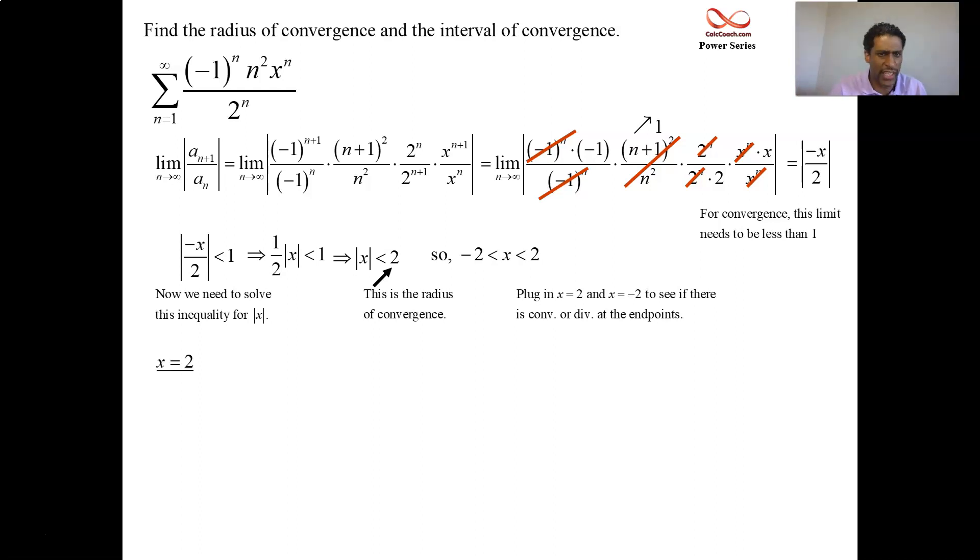So we put in x equals 2 to check that endpoint. Replace the x with the 2. What happens is those 2 to the ns will end up canceling out on you, and you're talking about an alternating n squared. When n is 1, it's a negative 1. When n is 2, it is a plus 4. Negative 1 plus 4 minus 9 plus 16. No way that's going to converge. That limit doesn't exist.